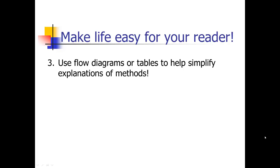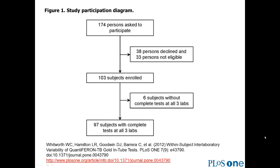Another way to make life easy for your readers is to use flow diagrams or tables to help simplify the explanation of methods. A very common thing that people will do is if you've got a clinical study with participants flowing through your study, you might do a participant flow diagram like this. 174 persons were asked to participate. Here's how many actually enrolled. Here's what happened to them. You can see that information is really easy to glean off a diagram like this. Really hard to get if you tried to write that in text. It would be really boring to read and hard for the reader to glean that information. It's actually much better presented in some kind of diagram.